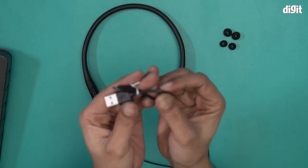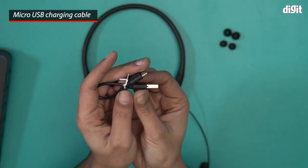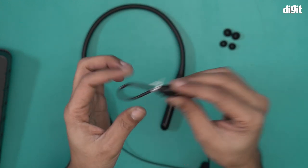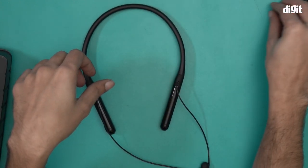This is the micro USB charging cable that comes with this particular box. This is the charging cable that you use to charge this particular neckband. Now let's take a look at the neckband itself.